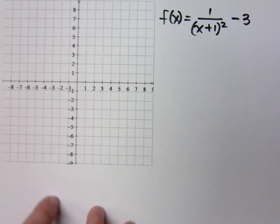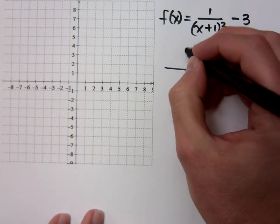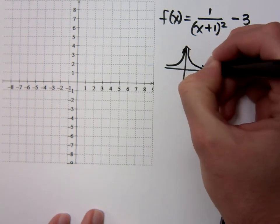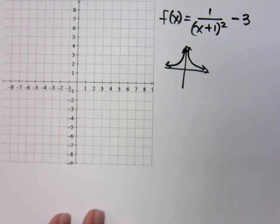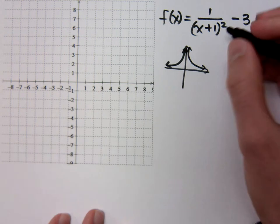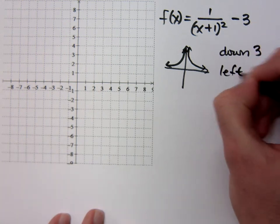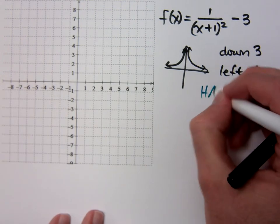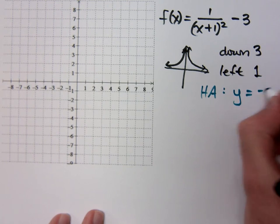...to video 100 and something, you know the shape here is what? Yeah, we'll call it the Atari guy, right? Again, how have I moved this guy? Down 3, left 1, which means my horizontal asymptote is where y equals...